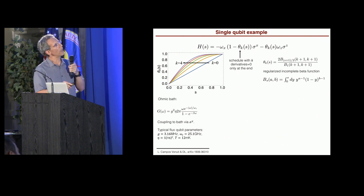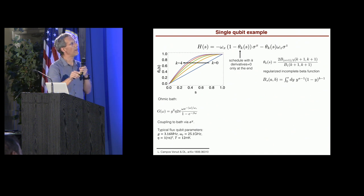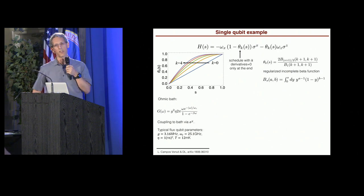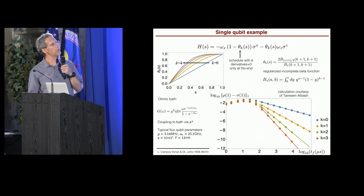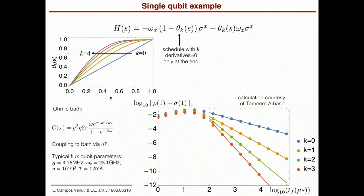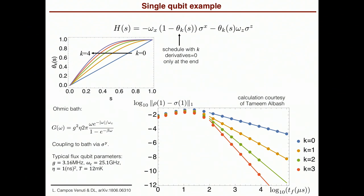How well do we do? Let's couple this system to this one qubit to an ohmic bath via sigma Y, insert typical flux qubit parameters, and solve this problem numerically. And this is thanks to simulations by Tamim. So here is the log of the error as a function of the log of the total evolution time. And so what happens is that at short evolution times, the error is large, but then it starts to drop as you'd expect from the adiabatic theorem. And what's very pretty is that as you increase the number of zero derivatives at the boundary, the slope drops.